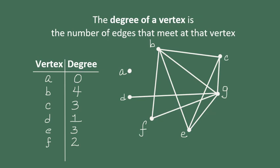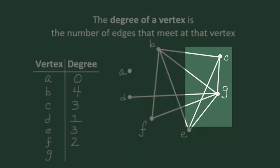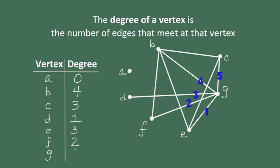We have one more vertex, vertex G. Let's count the number of edges that meet at this vertex: 1, 2, 3, 4, 5. So vertex G with a degree of 5 has the greatest number of connections to other vertices.